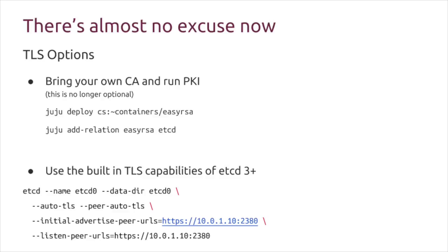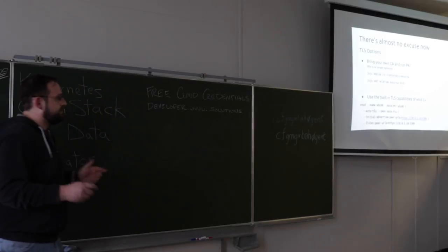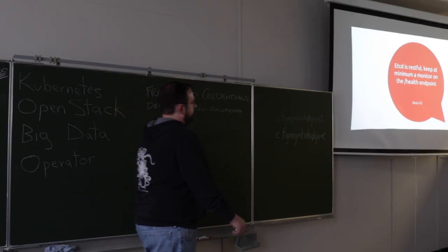There's literally no excuse not to do this. We made TLS mandatory about four months ago in the Juju charms — when you Juju deploy etcd, it will complain if it cannot find a certificate authority or doesn't have the keys. Security is no longer optional. And if you're using a non-Juju-based solution, etcd now has the capacity to generate self-signed PKI infrastructure as of the V3 update, which is fantastic. Just get that in there, make sure you're using TLS keys, and we'll move on to basic number three.